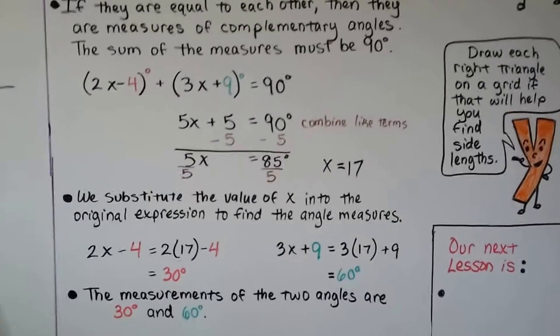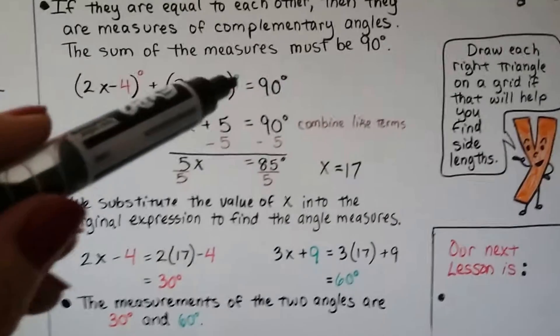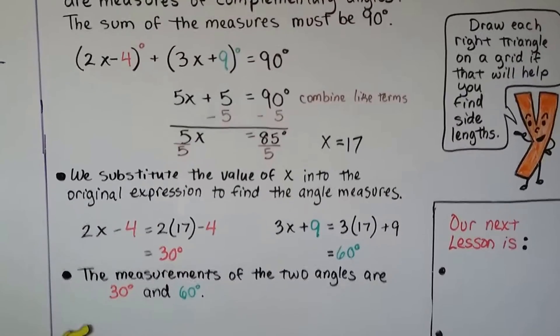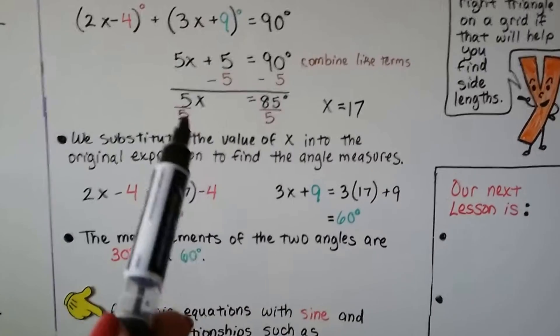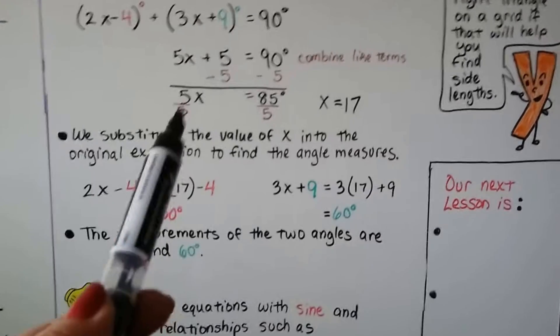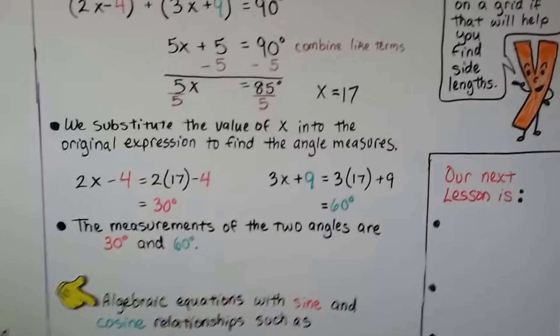We can combine the like terms. The 2x and the 3x make 5x. This minus 4 plus 9 makes a positive 5. We can solve for x by subtracting 5 from each side, getting 5x equals 85 degrees, dividing both sides by the coefficient 5, and finding out that x is equal to 17.